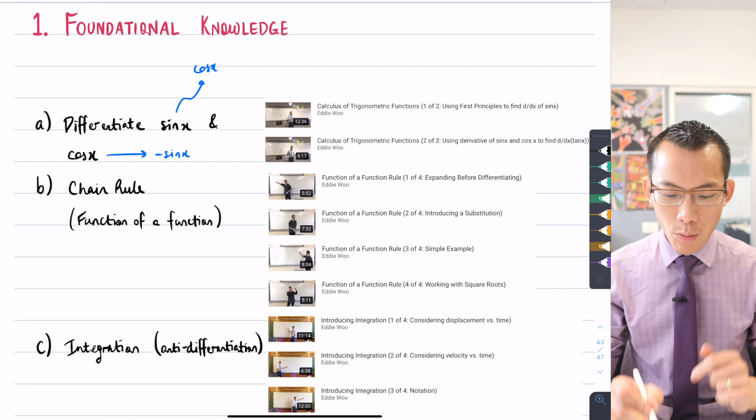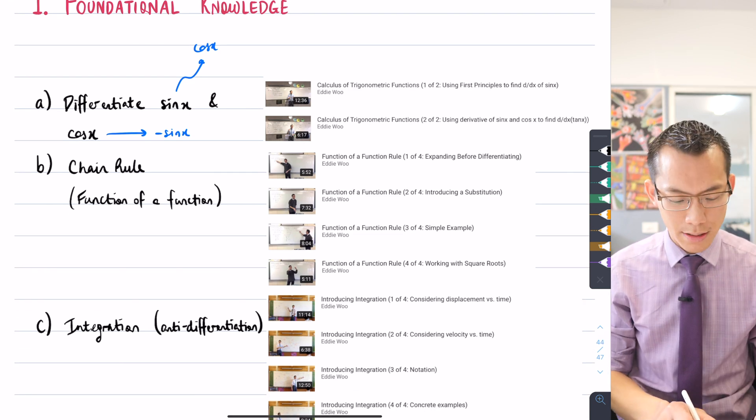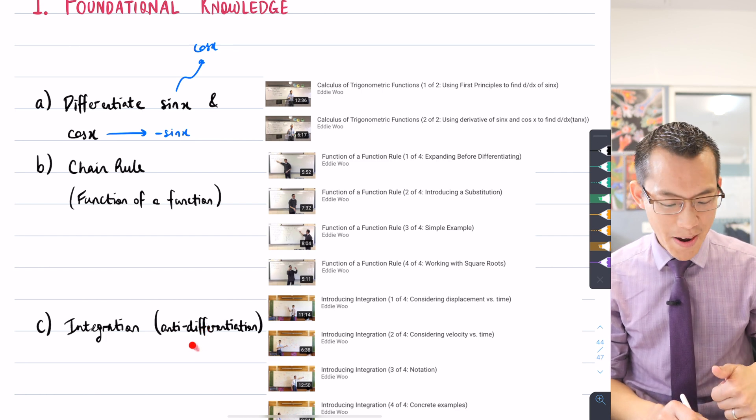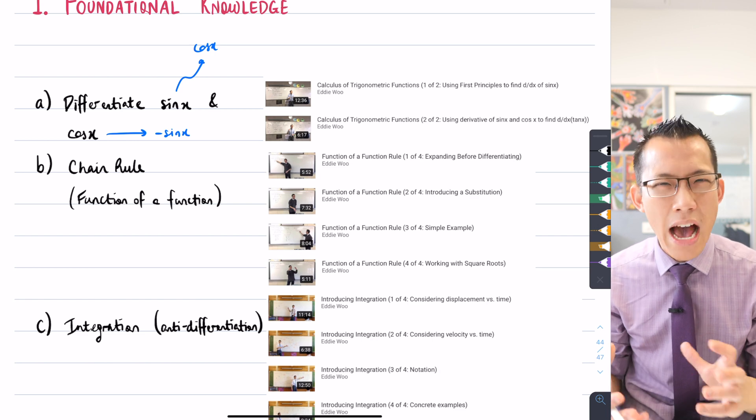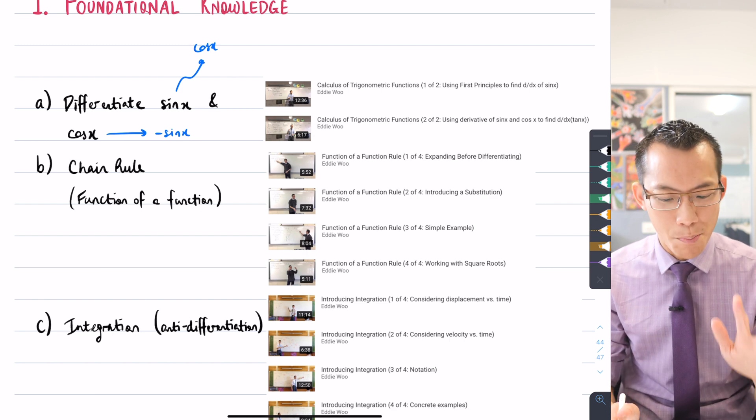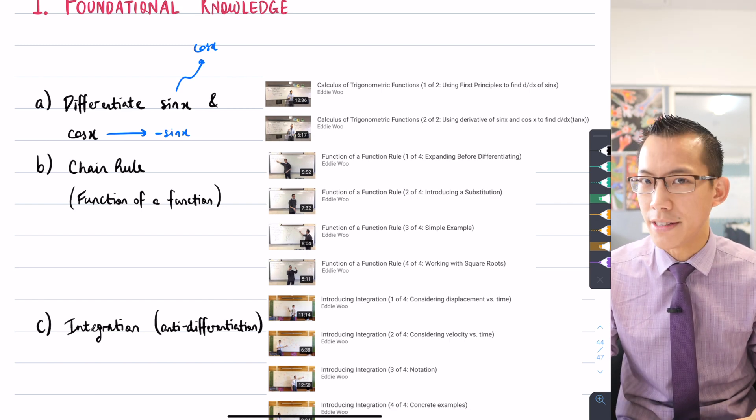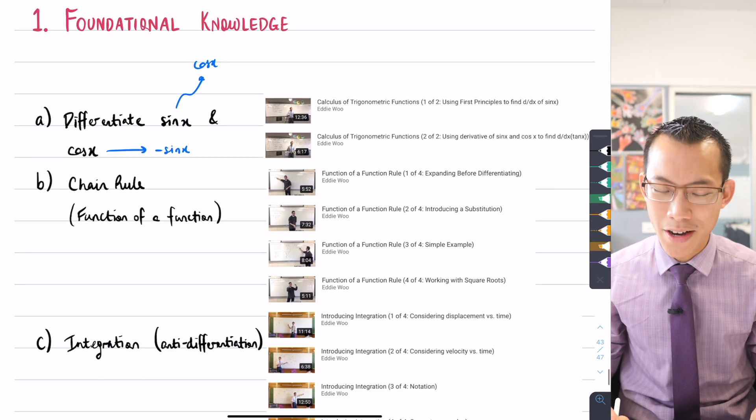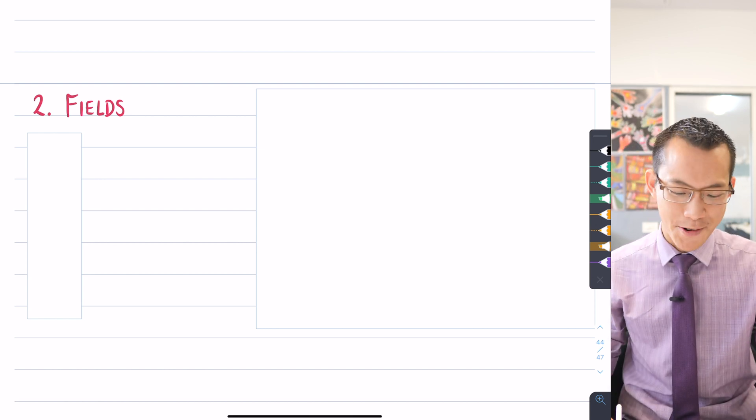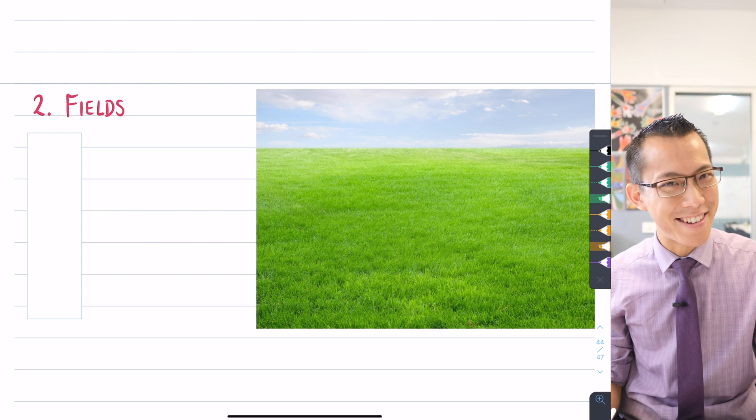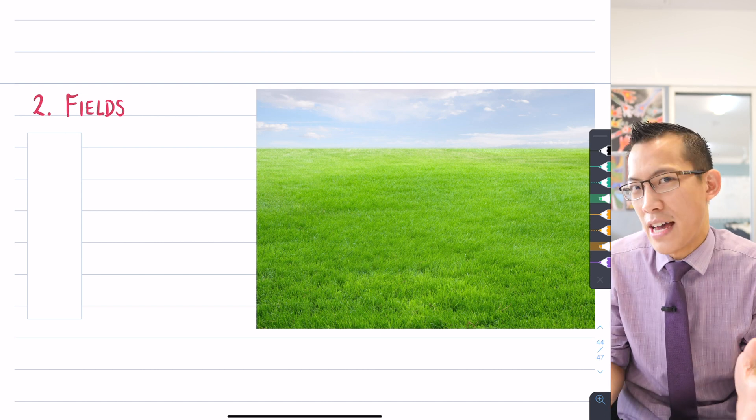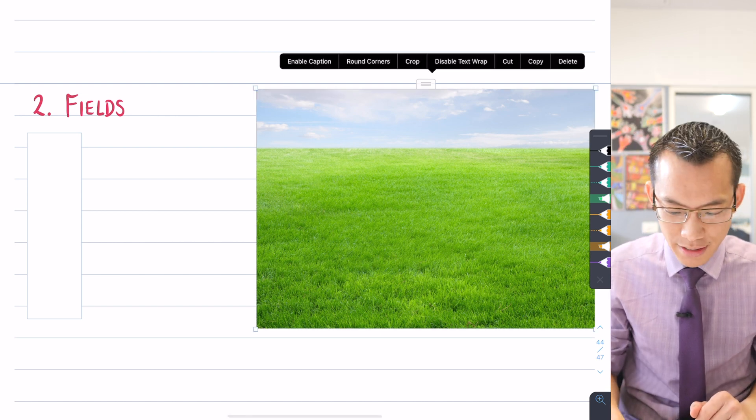So this is the foundational knowledge. This is what you've got to have understood. I will point out because the newest idea to you is this integration, this anti-differentiation idea, when we get to it in the course of this proof, I will try to explain it in a way that even if you don't have any of the big theory, you will still be able to follow along. We'll base it on our understanding of just regular differentiation. So that was point one, foundational knowledge. Let's now introduce this idea, what we call a field. Now, what do I mean by fields? I'm not talking about grassy fields. I'm talking actually about a kind of mathematical object that you already know about, you just haven't called them fields.